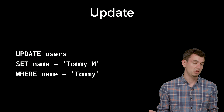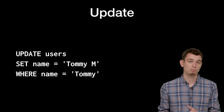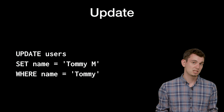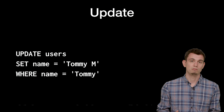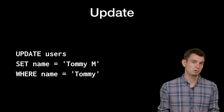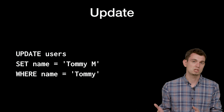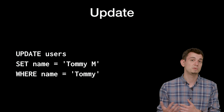After that, we have an UPDATE query. We start by saying UPDATE, then the table name users. Then we say SET and specify the column name, with a value of Tommy M. Then we filter with WHERE name equals Tommy. So this query says for every row where the name column is exactly the string Tommy, change it to Tommy M. These queries are fairly simple, and you'll often find the queries in your app are also pretty simple, because you're usually just storing values and reading them back.